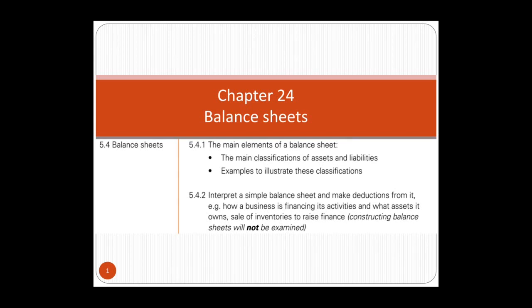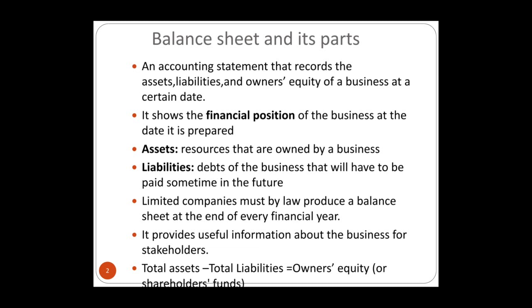Welcome back to chapter 24. This chapter is about the balance sheet, the second financial statement that a business usually prepares at the end of the year. We'll explain the main elements of the balance sheet and what we can get out of it. The balance sheet is an accounting statement that records the assets, liabilities, and owner's equity of the business at a certain date. If you want to see the financial position or value of the business, you look at the balance sheet.